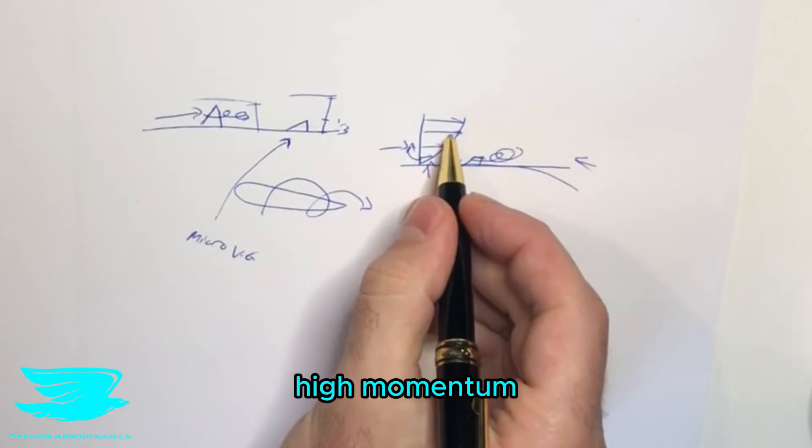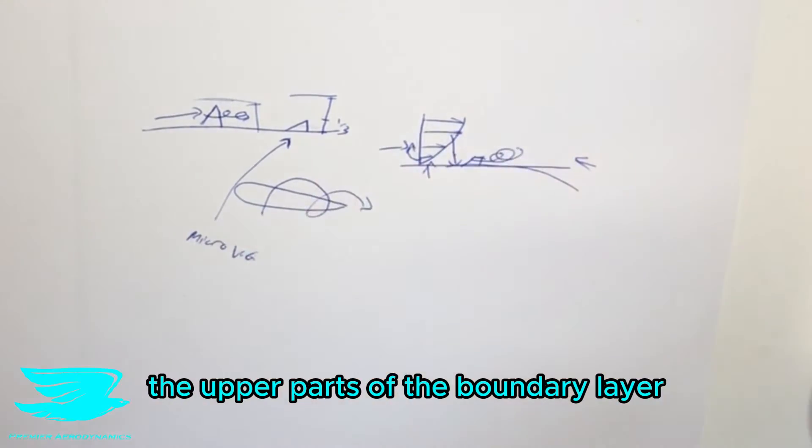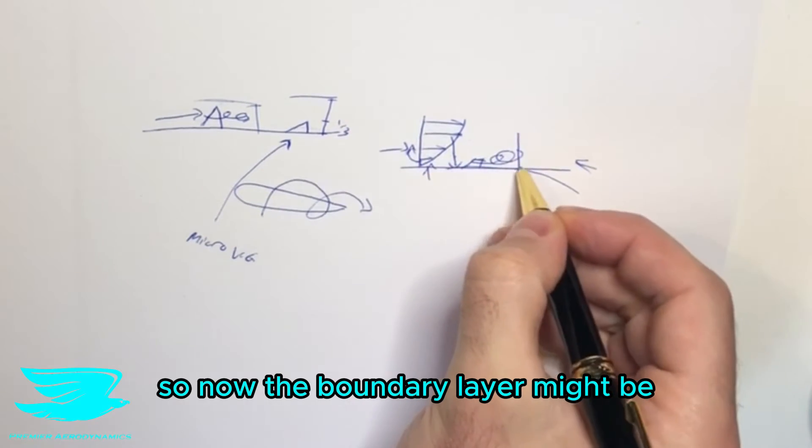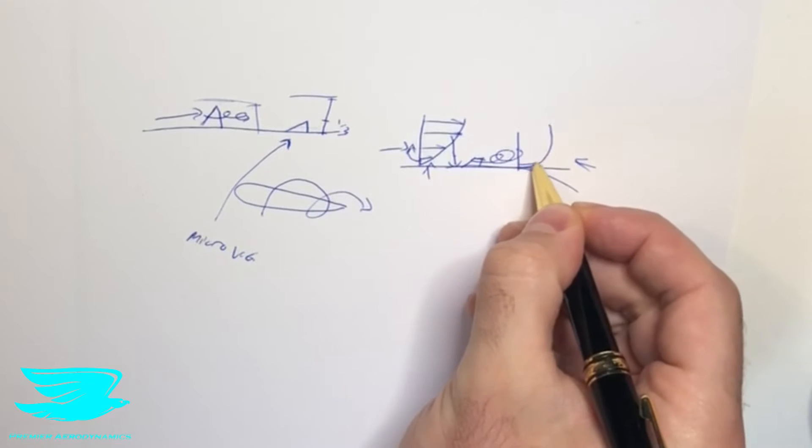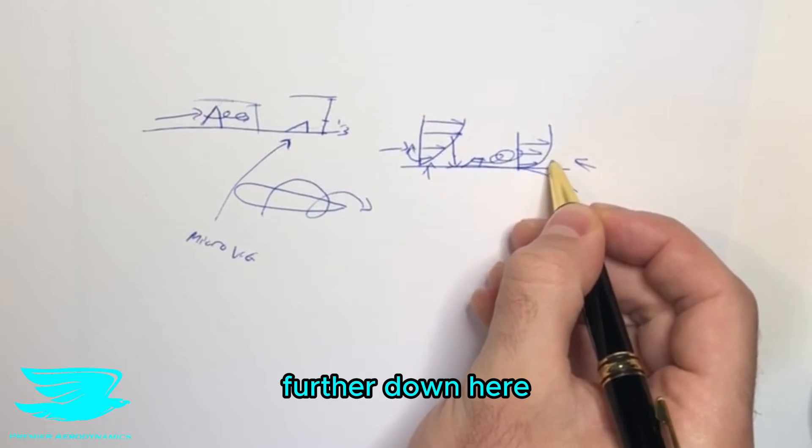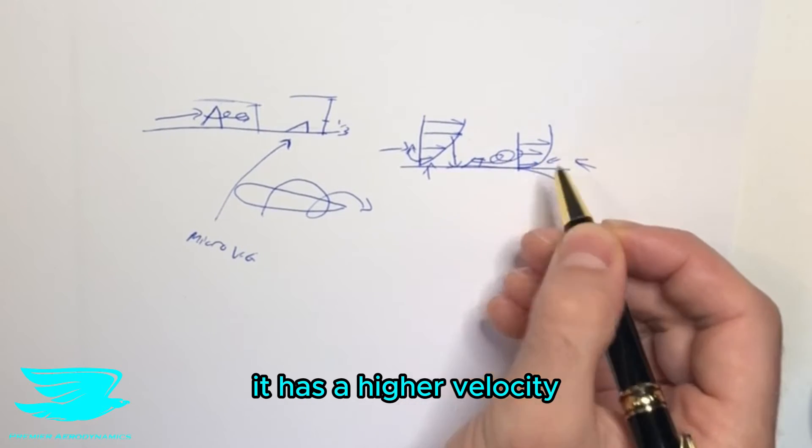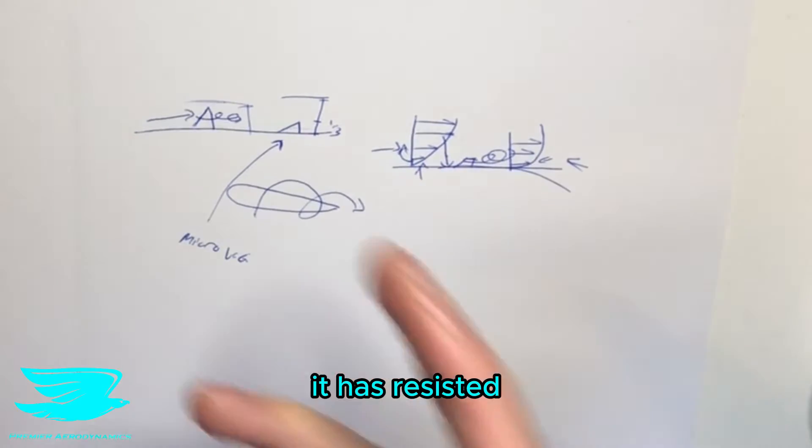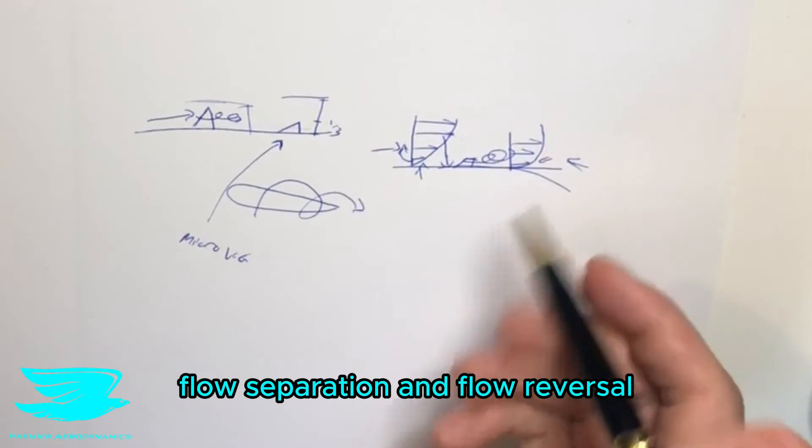So you're mixing high momentum fluid from the upper parts of the boundary layer and even the freestream flow into the lower parts. So now the boundary layer might be more like this. So when we are further down here, it has a higher velocity, so it's moving faster. Or it might even just be more like this and it has resisted flow separation and flow reversal.